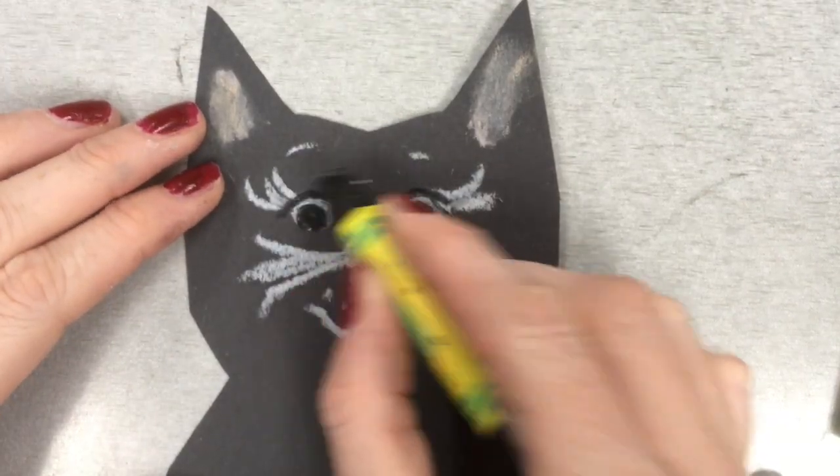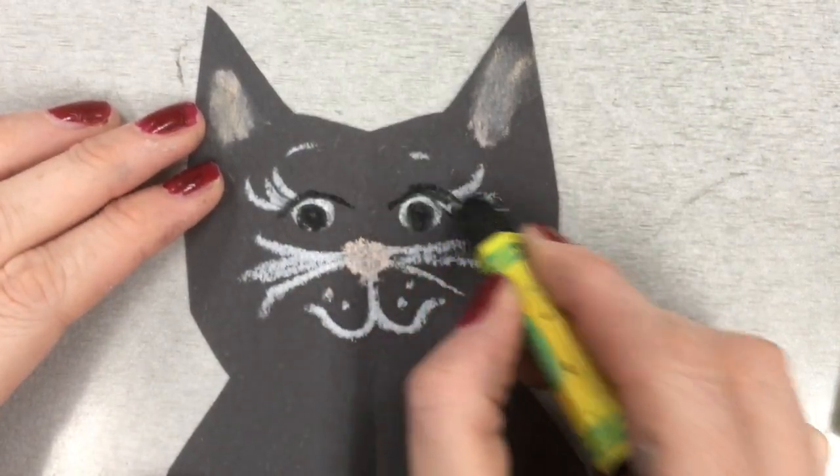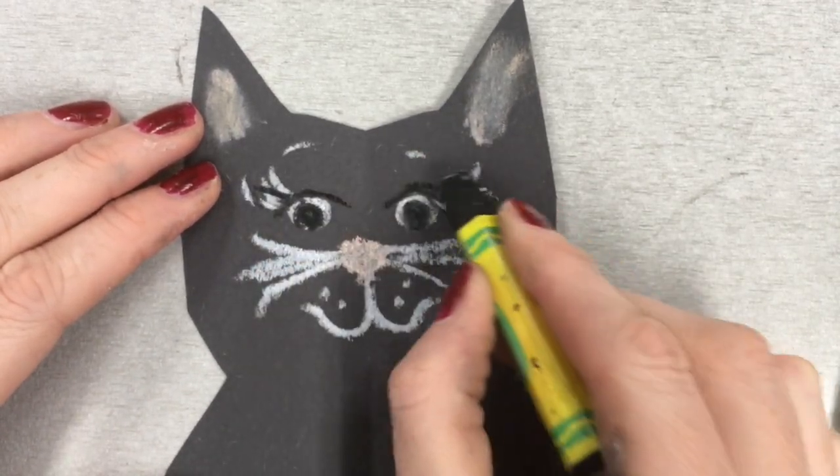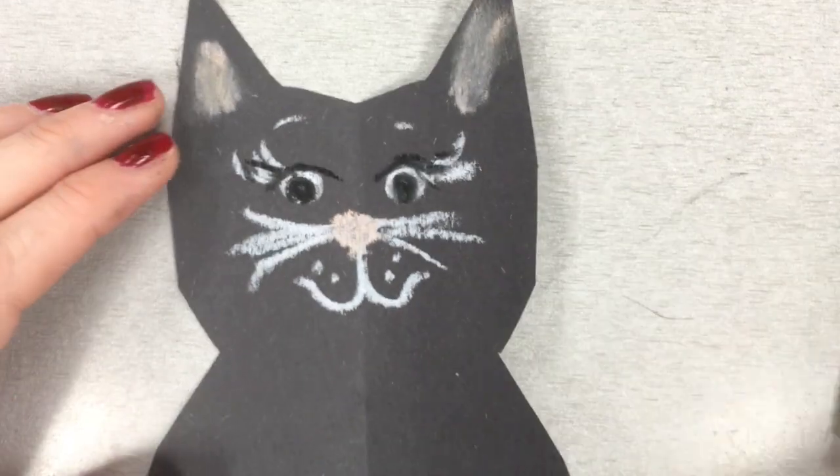And rosy cheeks might look nice with your kitty as well. I would take a pink to make little circles by the corners of his mouth. Right now I'm just adding details, highlighting different areas to make things stand out.